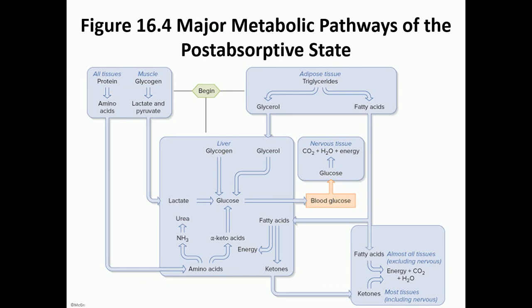When more energy is needed, the body may even start to break down its own protein and muscle mass. Those amino acids are transported to the liver, which can also make glucose out of them — another form of gluconeogenesis. Always think of the liver as a kitchen that can take different ingredients and cook up different things.